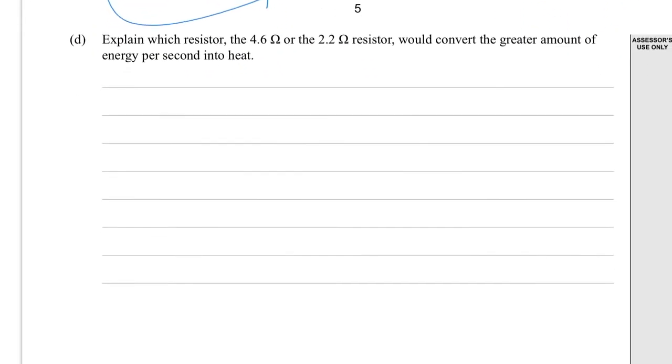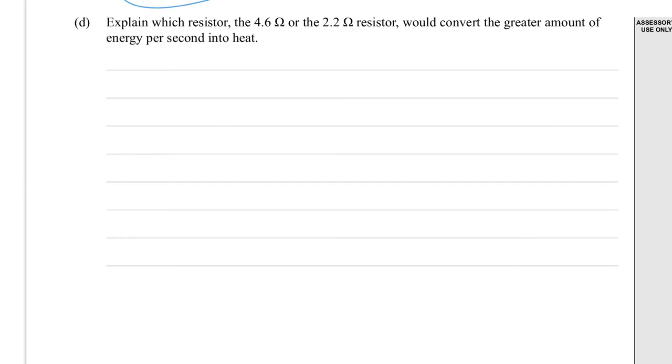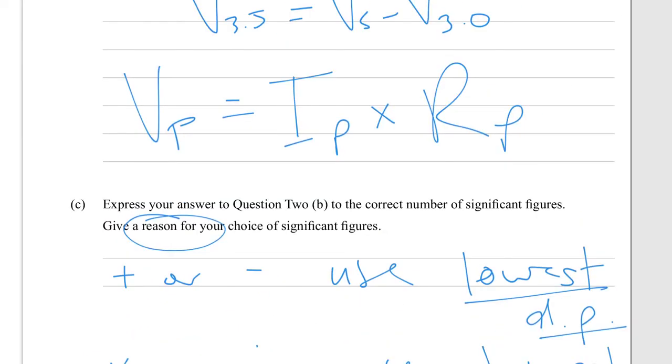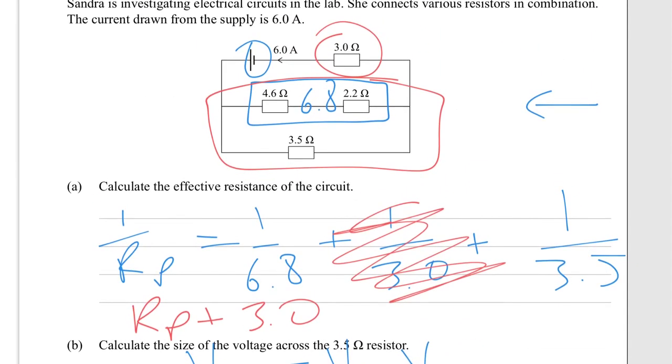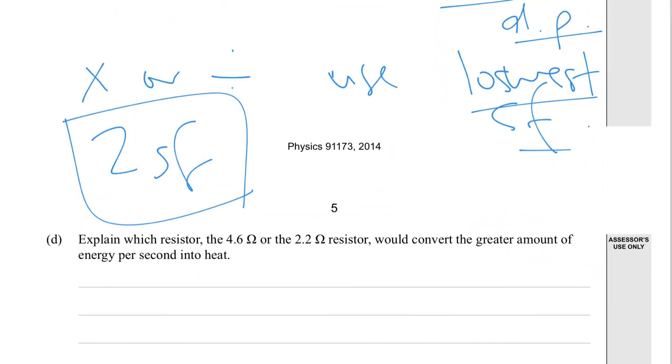OK, to explain which resistor would convert the greater amount of energy per second into heat. Again, we'd need to cruise back up and see: 4.6 or 2.2? Yep, it's on the same branch. If you're doing P equals I squared R, or P equals V squared over R, current is the same in both.